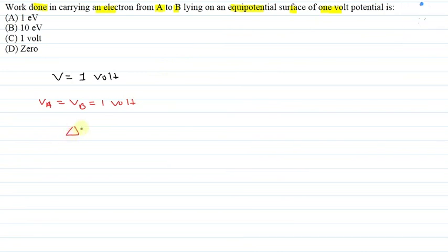Change in potential energy is equal to charge multiplied by VB minus VA.